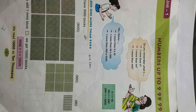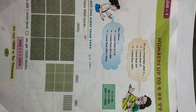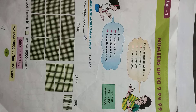Do you remember? 1 more than 9, 1 more than 99, 1 more than 999. When we add 9 plus 1, it is 10. 99 plus 1, it is 100. 999 plus 1, it is 1000. 1000 is the 4-digit number, and 9,999 is the largest 4-digit number.